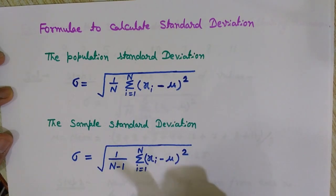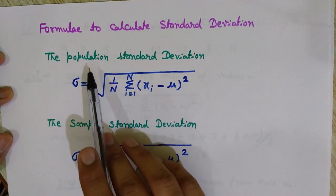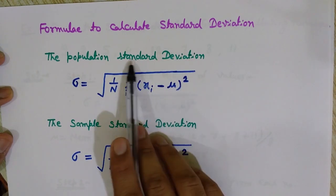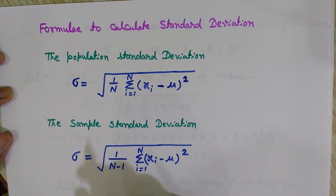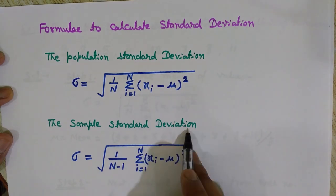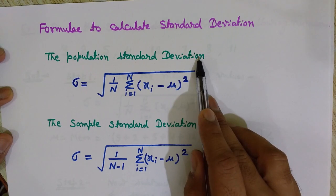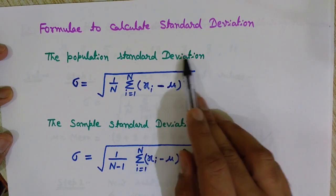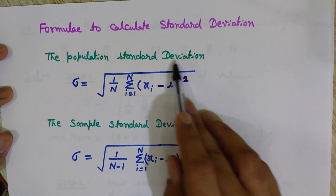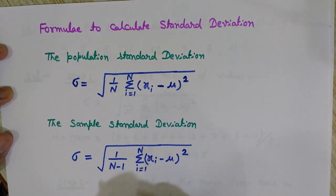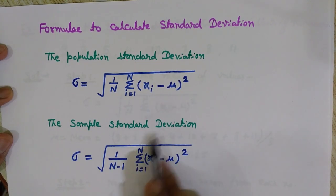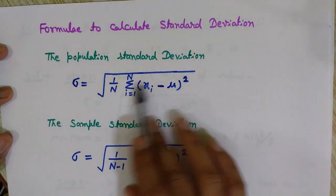When do we use these formulas? Whenever we take all the values present in the set to find its standard deviation, we use the population formula. But if we have a set of values and we are taking only a sample — suppose we have 10 numbers and we want the standard deviation for all 10, we use the population formula; but if we take only 7 out of those 10, we use the sample standard deviation formula.